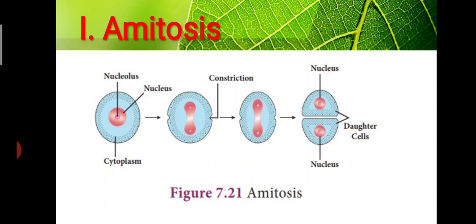During amitosis, what happens is the nucleus first elongates. Can you see here — this is the nucleus, it starts to elongate. The constriction appears after the elongation. That small bent part we call a constriction, and it deepens and divides the nucleus into two daughter cells. This is what we call amitosis.